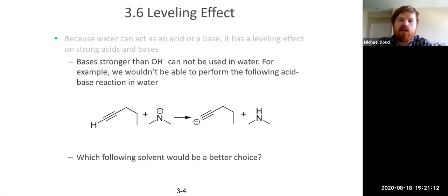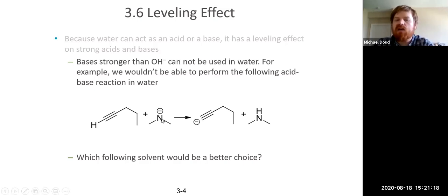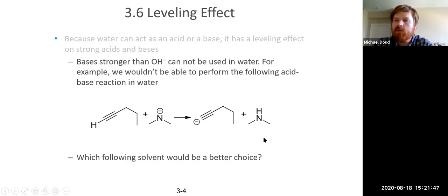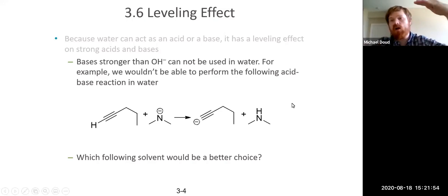Similarly, if you have a base stronger than hydroxide, you can't use it in water. NH₂⁻ — an ammonia anion — is one example. If we want to deprotonate a terminal alkyne, that lone pair needs to pick up the proton. But if we do this reaction in water, the nitrogen gets protonated by H₂O, forming the hydroxide ion instead. And hydroxide ion is not strong enough to actually pick up that proton from the alkyne. So this reaction can't occur because the base is too strong — that's the leveling effect. It takes your strong base and turns it into OH⁻, which is not as strong.